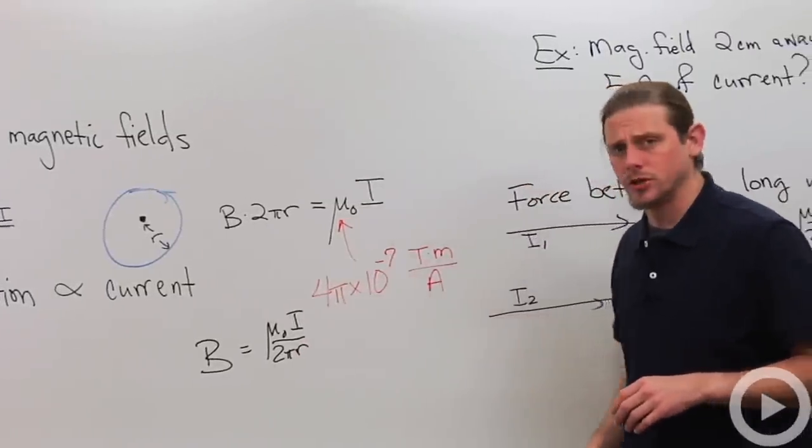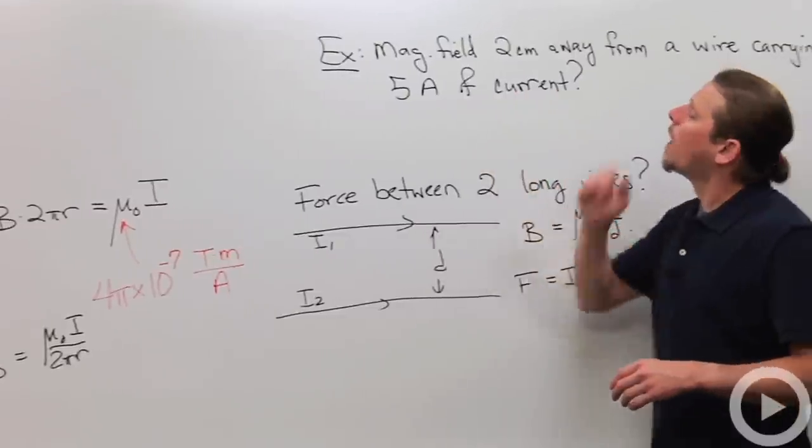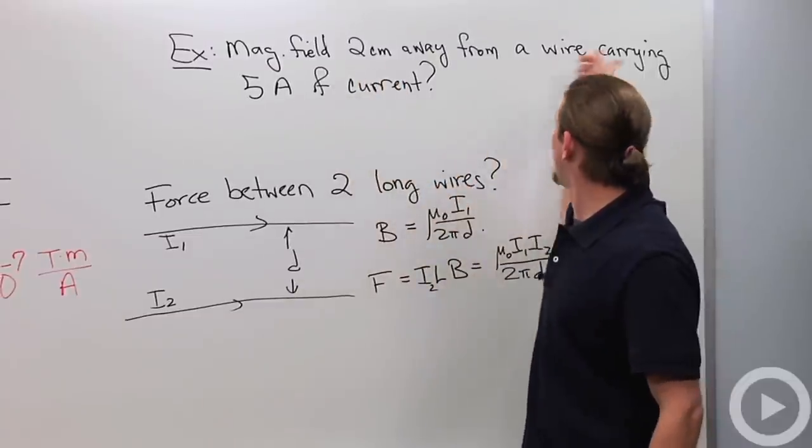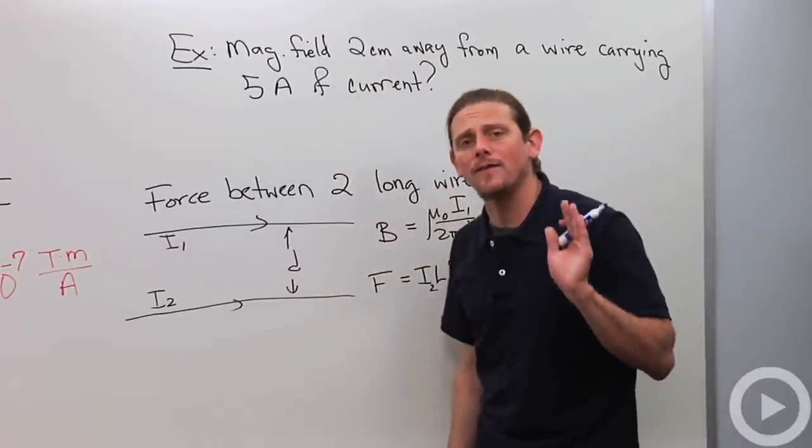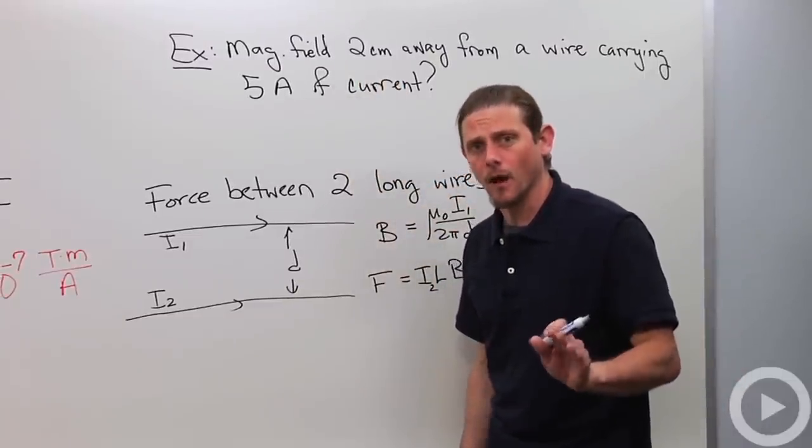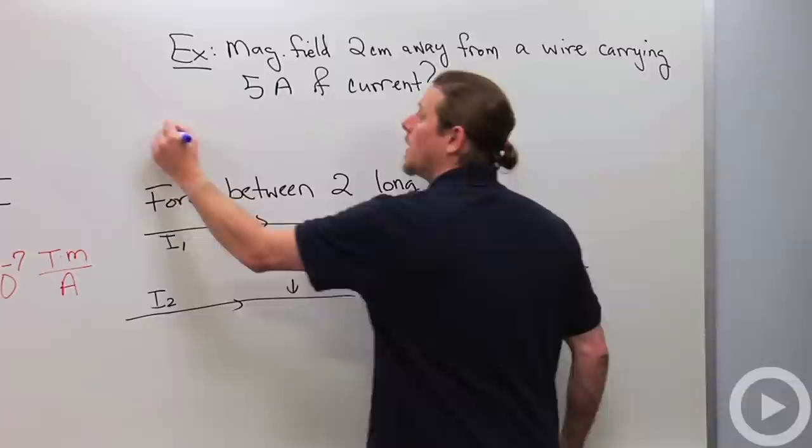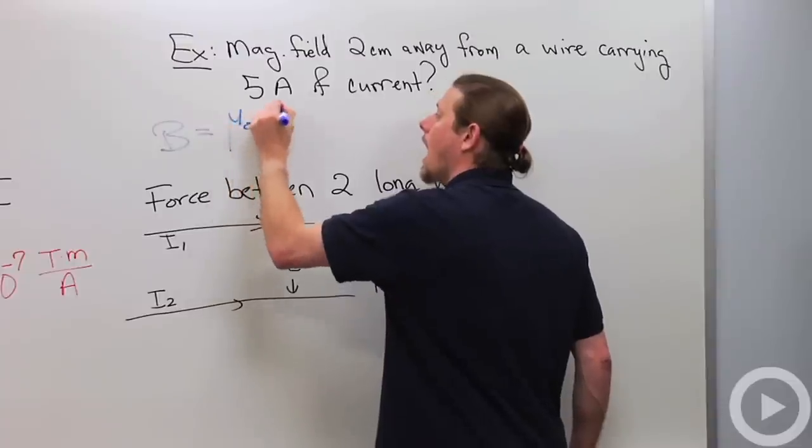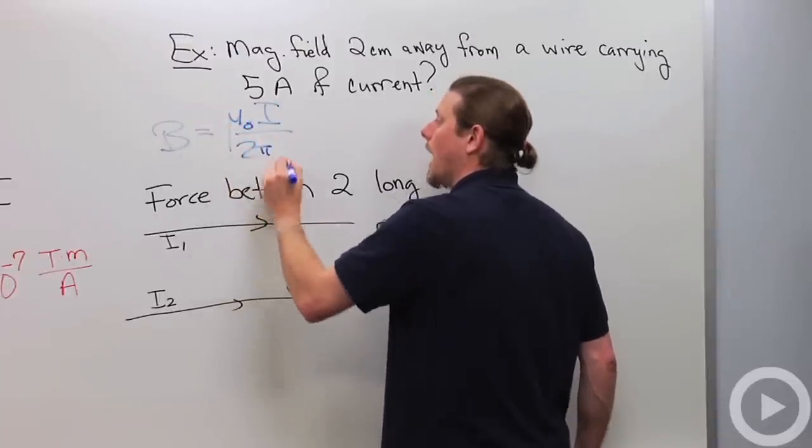Alright, let's do an example with this result. So, I want to know what the magnetic field is 2 centimeters away from a wire that carries 5 amps of current. Alright, well, I can just do this directly. B equals μ0I over 2πr.